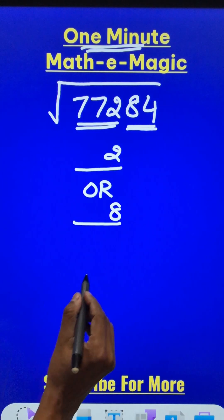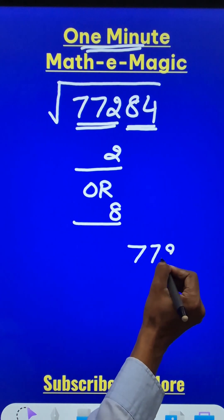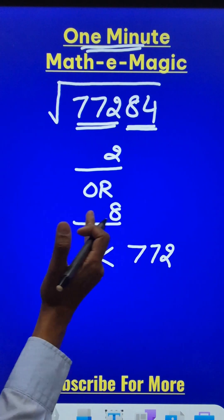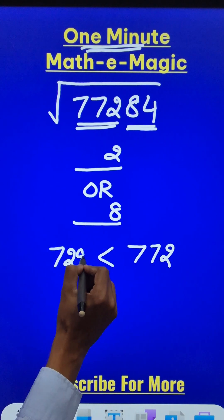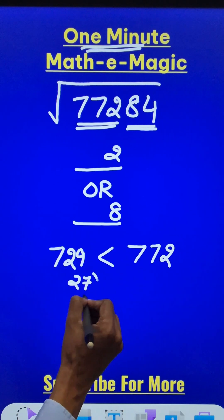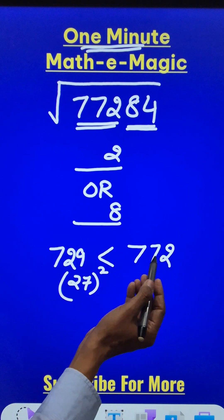Now for the remaining number 772, I have to find a number closest to this but lower than this, which is a perfect square. So 729 which is 27 square comes below 772.